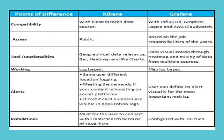Kibana is log-based and Grafana is metrics-based. In case of alerts, Kibana handles scenarios like same user logging from a different location, meeting demand if your content is boosting on social platforms, and if credit card numbers are visible in application logs — we can set alerts in Kibana for all these things. In case of Grafana, a user can define alerts visually for the most important metrics.